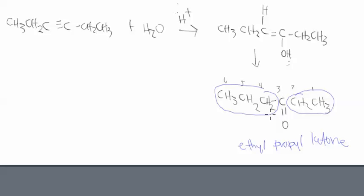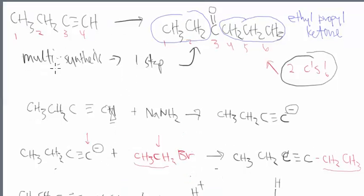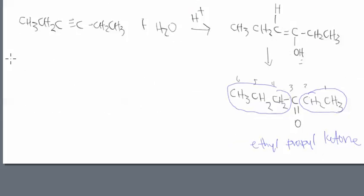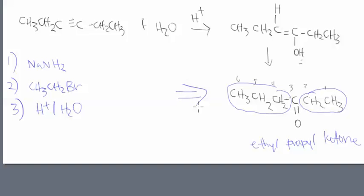So the answer, if this was given on a test and it would say starting from this reagent, how could you make this product? You would either show the steps like this in detail, or you could say in step one I would add NaNH2. Then once the acetylide ion forms, I would add ethyl bromide. Then once that happens, I would add acid and water, and that rearranges into the enol for me automatically. So this is a three-step process. Three reagents go through the reaction process in order to give me this final answer.